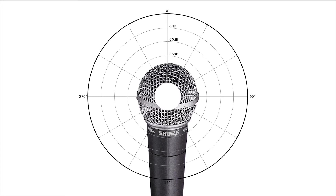The most basic pattern is omnidirectional. An omnidirectional microphone effectively has no pickup pattern — sound coming in from any angle is perceived at the same volume. These end up picking up a fair amount of reflected sound, and you get a lot of the room in your mix.